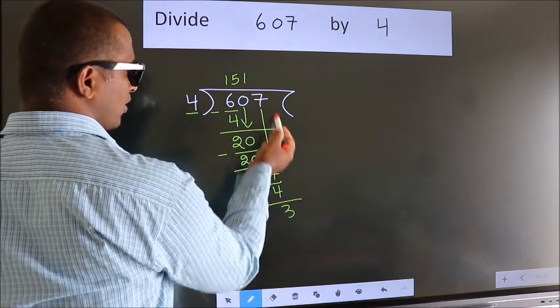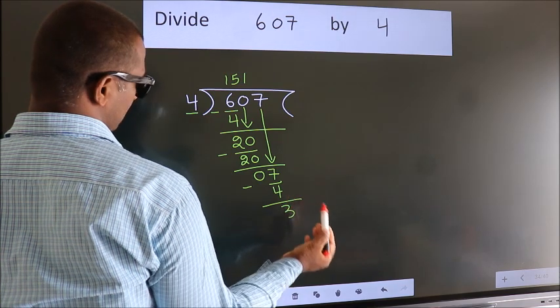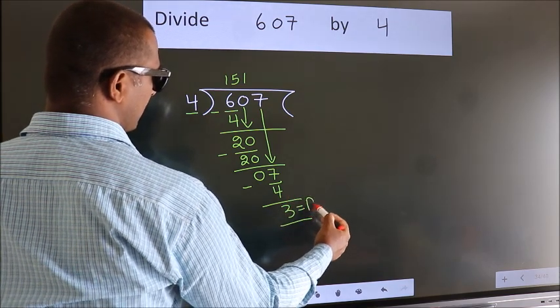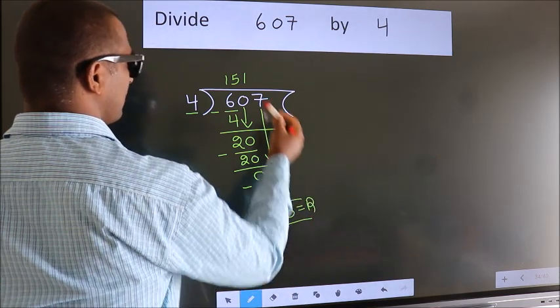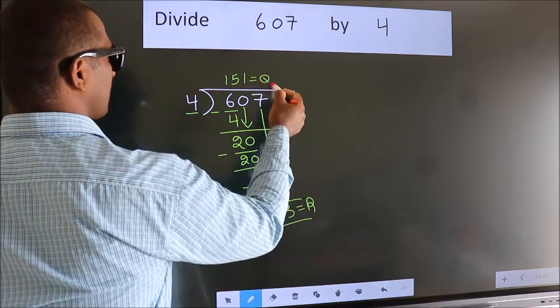There are no more numbers to bring down, so we stop here. This 3 is our remainder, and this is our quotient.